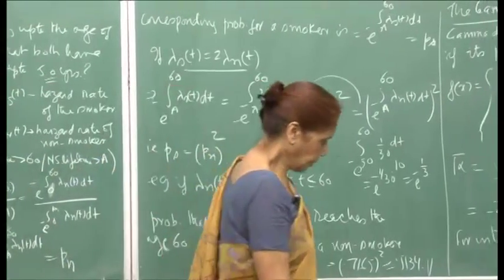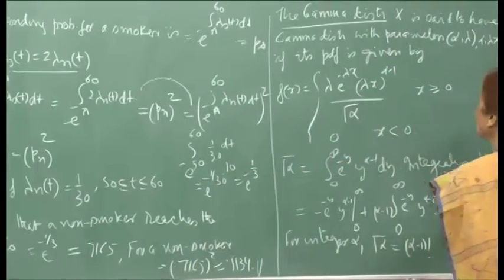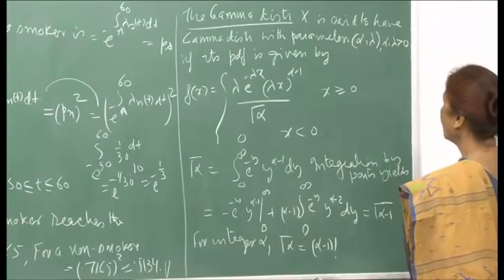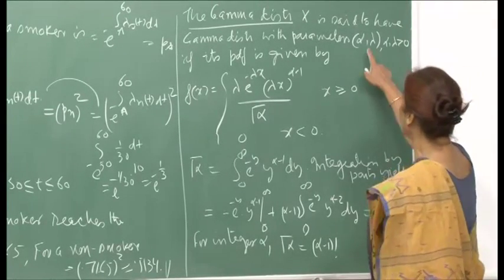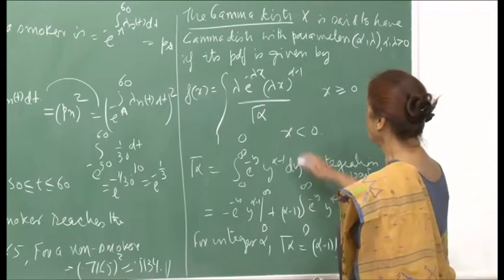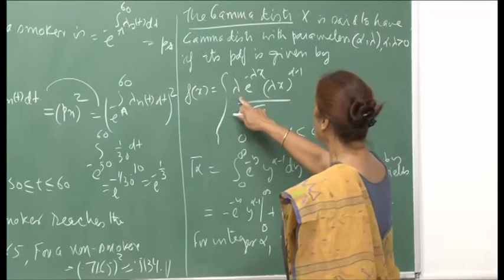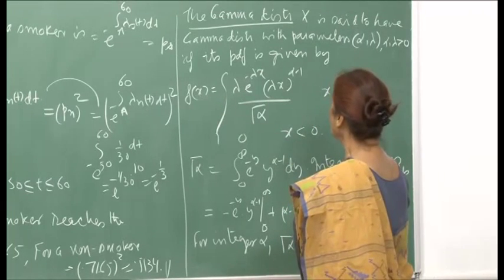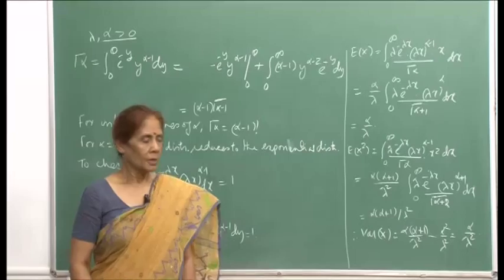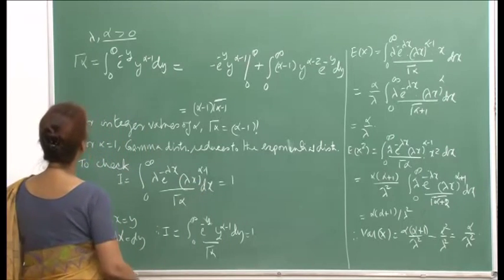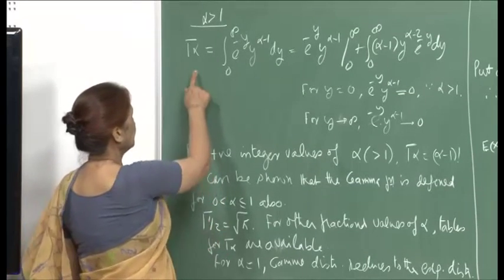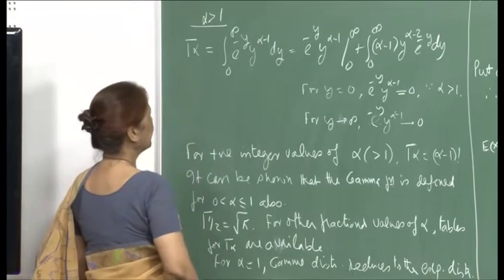We continue with more special continuous random variables. The next one is the gamma distribution. x is said to have gamma distribution with parameters alpha and lambda, both positive, and the PDF is f(x) equals lambda e raised to minus lambda x times (lambda x) raised to alpha minus 1 divided by Gamma(alpha), and that is why the name.